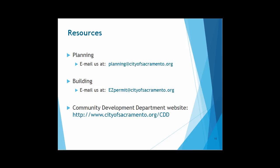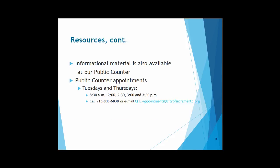By way of future reference, for your convenience, we have a couple of email addresses in the event that you have questions for planning or building. For planning, you can email them at planning@cityofsacramento.org. For building, you can email us at ezpermit@cityofsacramento.org. The city also has a website that is rather extensive in terms of information helpful when wanting to submit for a particular project — to determine what fees might be, the requirements for plans and supporting documents. You're also welcome to come to the public counter for that informational material in the event that you don't have internet access.